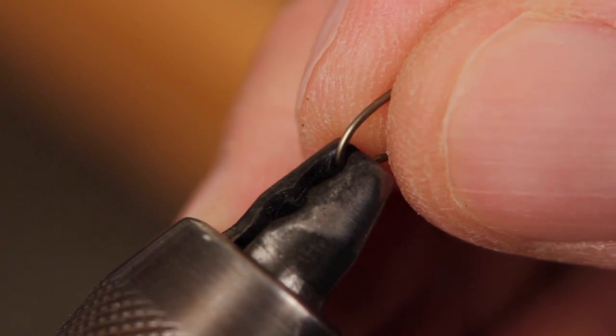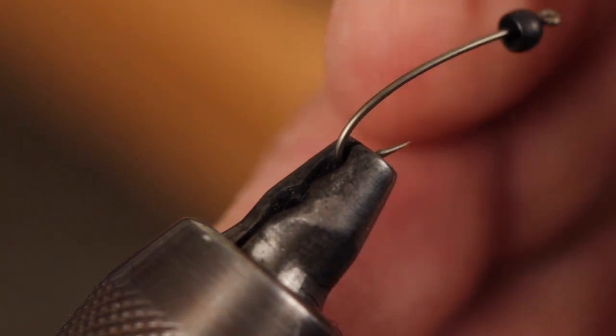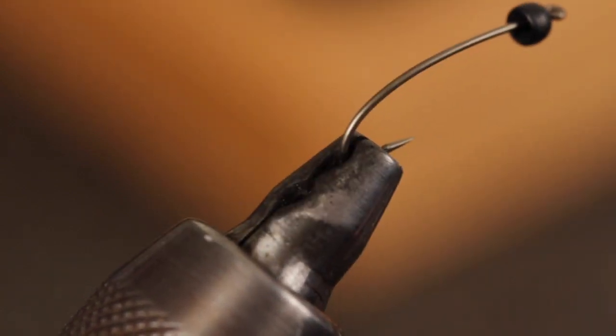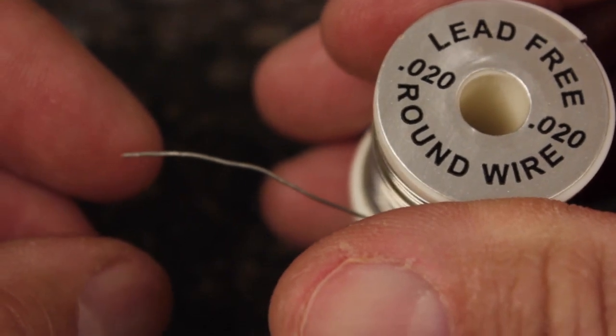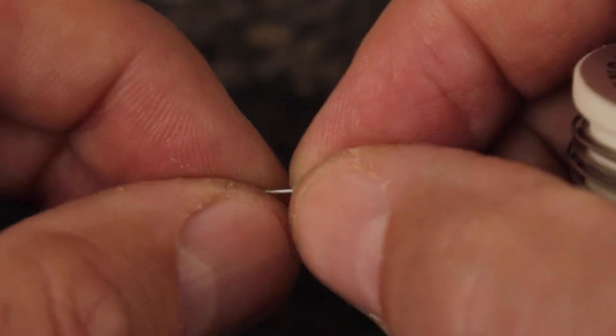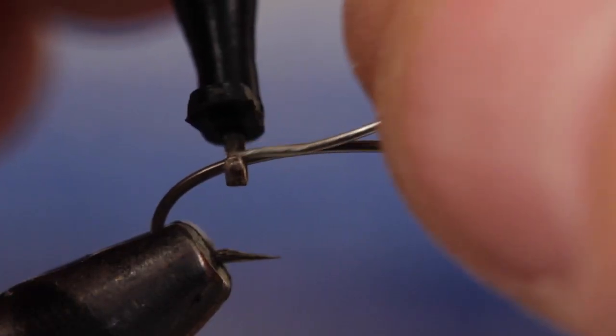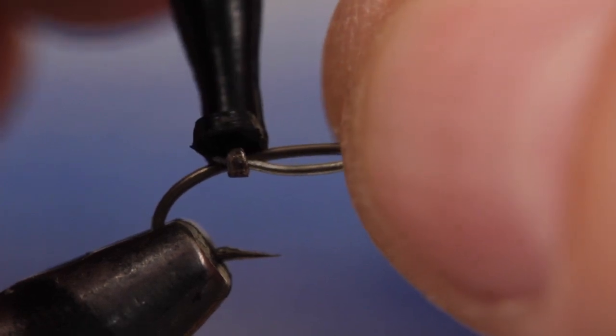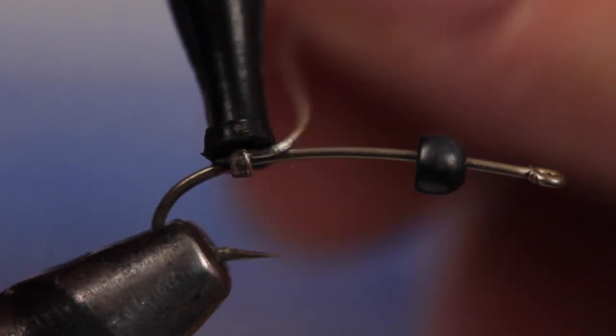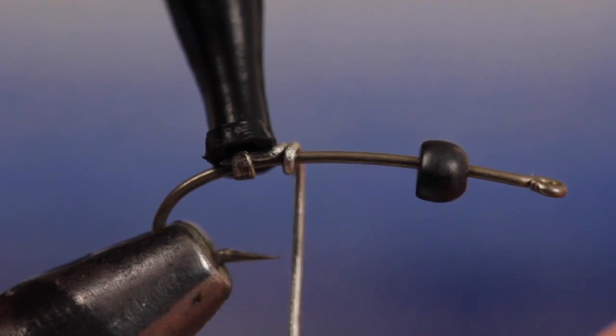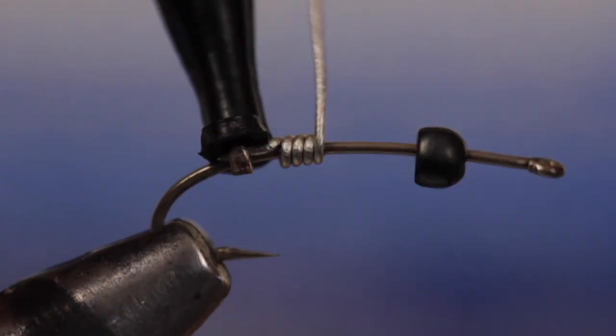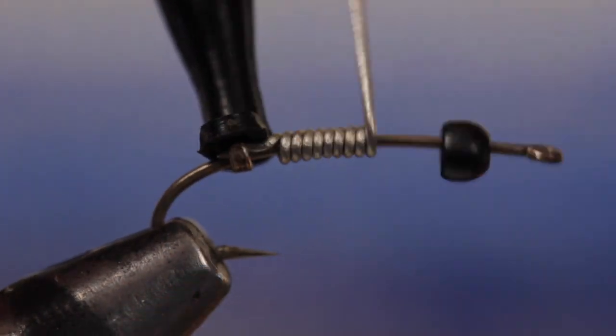With the bead in place behind the hook eye, get your hook firmly secured in your tying vise. To get the fly down fast to where the fish are, 0.02 lead-free wire is used. To conserve wire, while holding the spool in your right hand, clamp the very end to the near side of the hook with easy hackle pliers and start taking wraps forward. 15 or so is plenty.